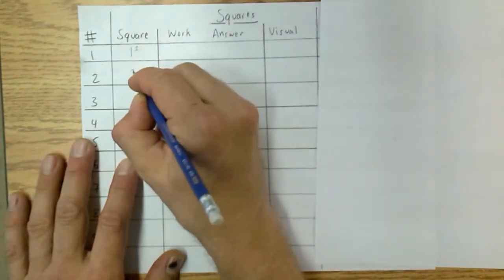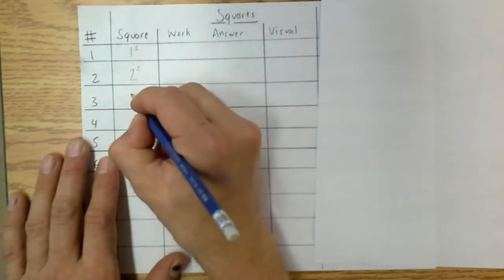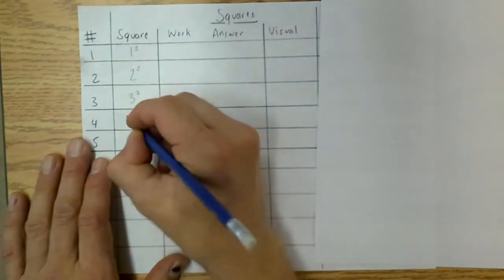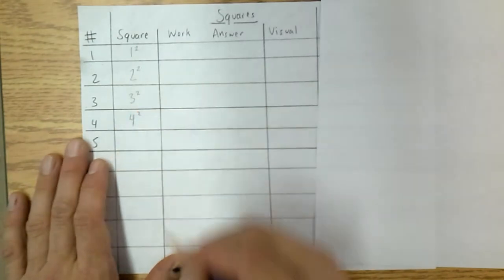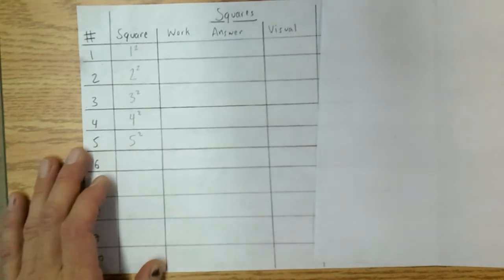So if we have 2 squared, we would go 2 squared. And that's what the little 2 means. 3 squared would be 3 squared. 4 squared would be written 4 to the power of 2. 5 squared is 5 to the power of 2.